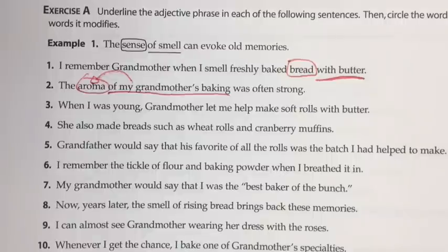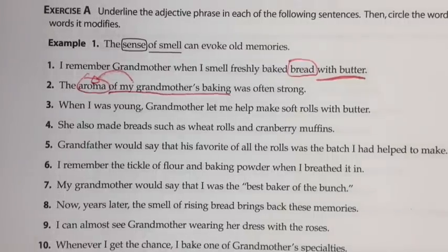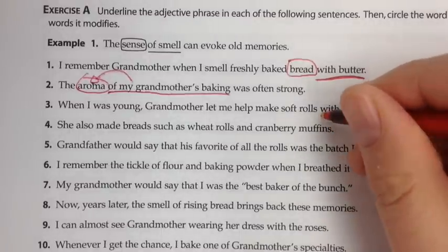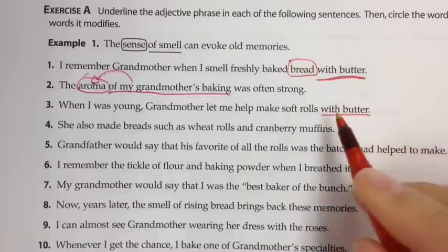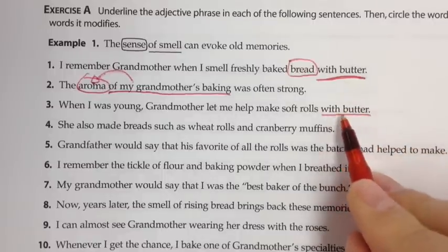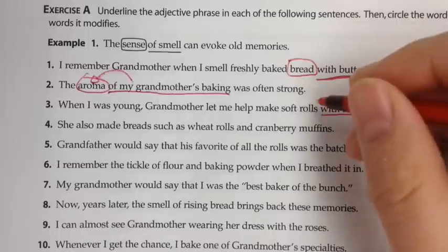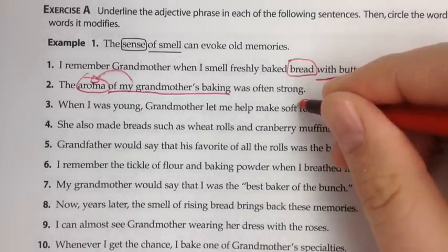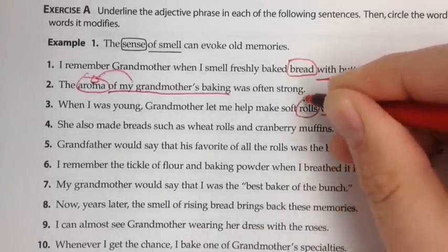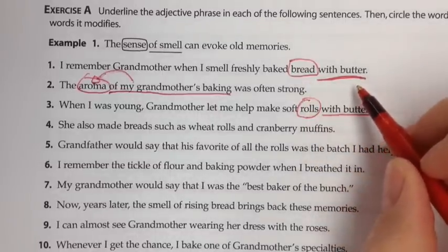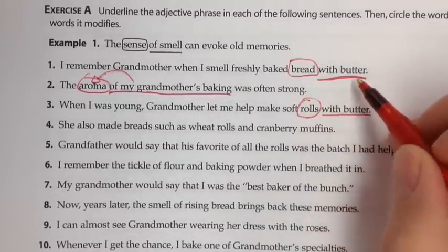Number three: when I was young, grandmother let me help make soft rolls with butter. 'With' is a preposition and 'butter' is the object of that preposition. Both of these tell us what kind or which one — which rolls we're talking about. You're probably seeing a pattern here: we have a noun and then a prepositional phrase describing it. That's pretty much how it goes.